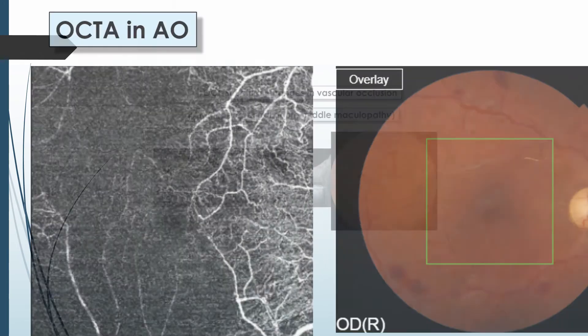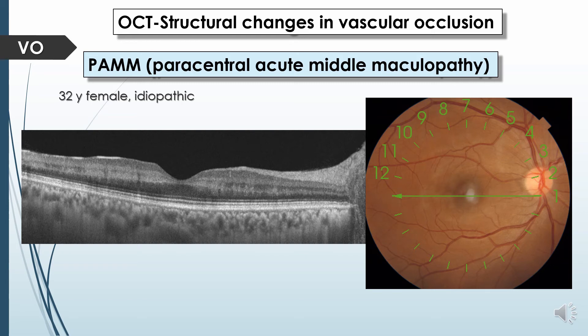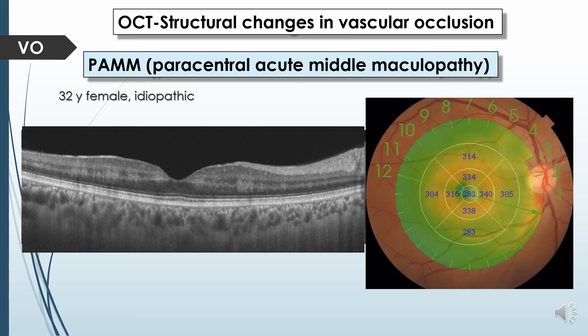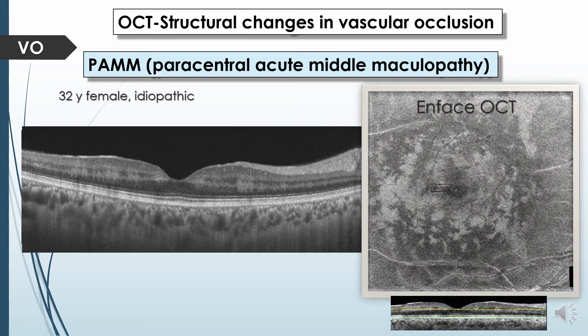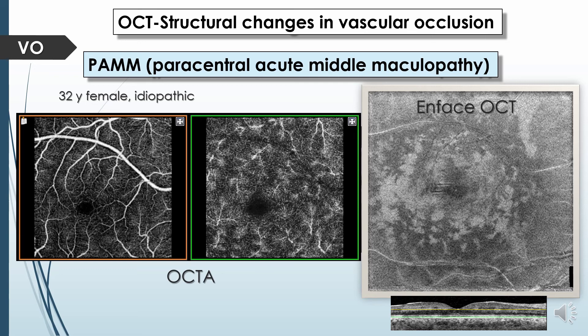OCT and OCT angiography play an important role in diagnosis of paracentral acute middle maculopathy (PAM), which may occur secondary to various retinal disorders like hypertension and vein occlusion, or may be idiopathic. In cases where color and fundus fluorescein angiography are equivocal, B-scan OCT shows characteristic hyperreflectivity of the middle retinal layer precisely at the junction between the inner nuclear and outer plexiform layer, which may be segmental or diffuse. En-face OCT through this layer shows hyperreflectivity surrounding the occluded vessels, while OCT angiography shows low or absent flow signals at the deep capillary plexus with loss of the characteristic appearance of this plexus.